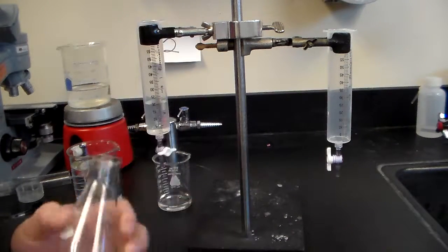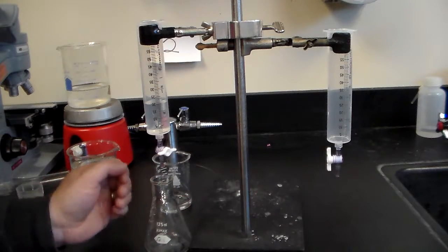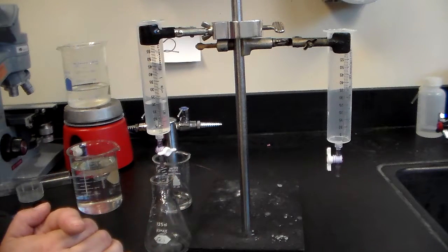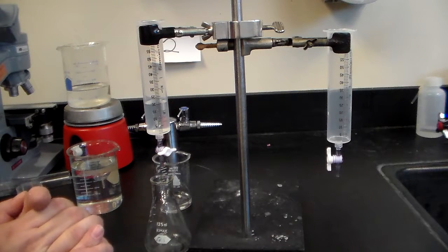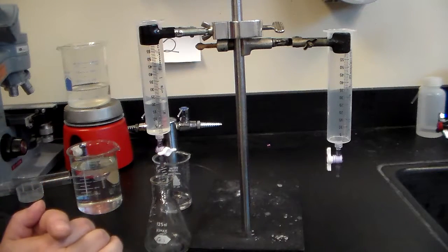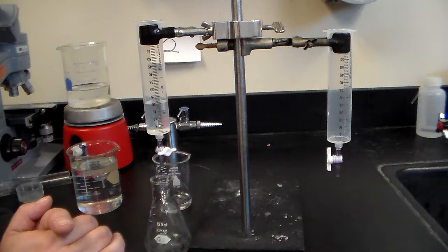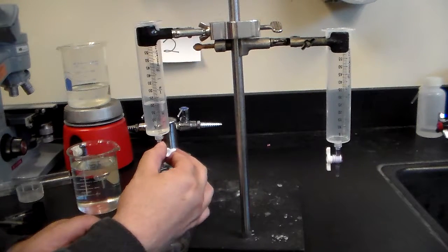You're going to put the flask underneath here and then you're going to release a certain amount of acid in there. Actually, I should say a certain amount of base, because the base is going to be our unknown in this experiment. We're going to know the concentration of our acid. We're going to set in a certain amount, let's say five milliliters.